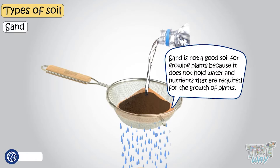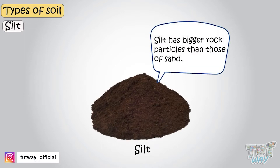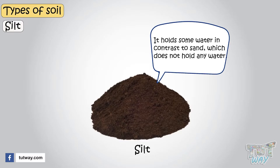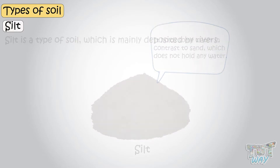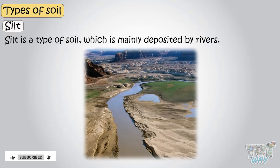Now let's see another type of soil, which is called silt. Silt has bigger rock particles than those of sand. It holds some water, in contrast to sand, which does not hold any water. Silt is a type of soil which is mainly deposited by rivers.